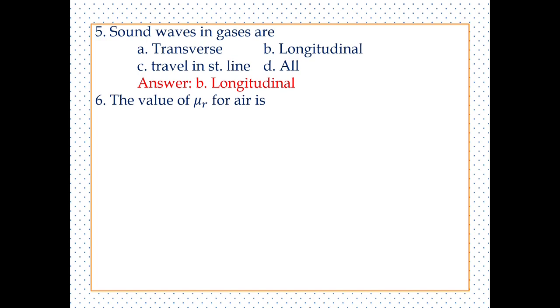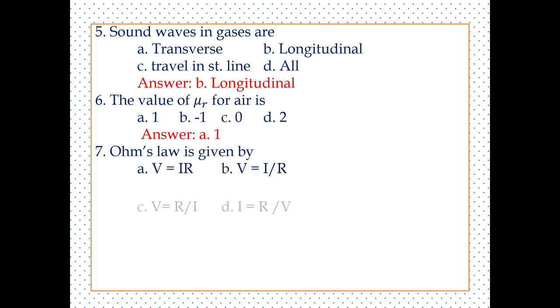The value of magnetic relative magnetic permeability for air is 1. Ohm's law is given by V = IR.